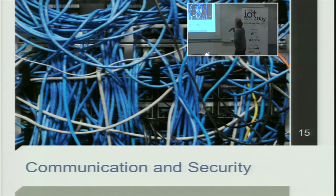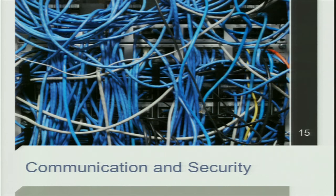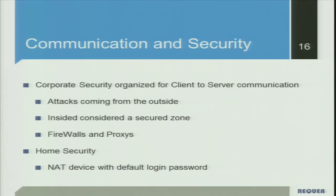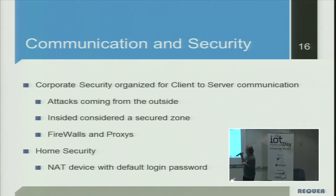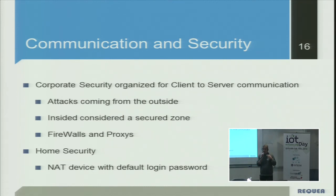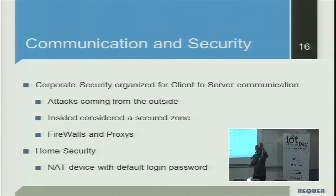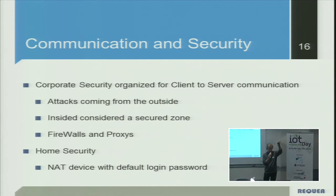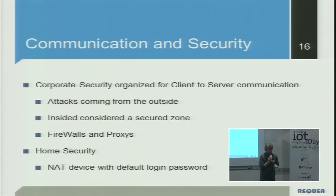Communication and security is a feedback and a call for something more secure and more simple. What we've seen is that corporate security is organized for client-to-server communication, assuming attacks come from outside. Communication from inside to outside is usually easy; communication from outside to inside is almost impossible. So if you have a cloud solution and devices inside a corporate network, and you need to send information from the cloud to those devices, you've got a problem — a firewall and proxy problem.